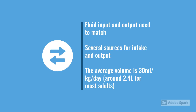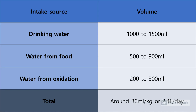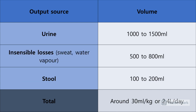We want our intake and our output to equal one another, so we're looking at about 30 mils per kilogram, or about 2.4 litres per day. As far as intake goes, drinking water is about a litre to one and a half litres — just over half of our intake — and the rest comes from our food and a little bit of water from oxidation. Our urine output is about the same as what we drink, so about one to one and a half litres, and then we lose some through insensible losses like sweat or water vapour, and through our stools as well.